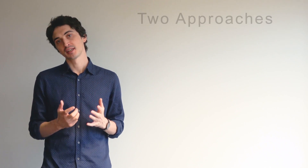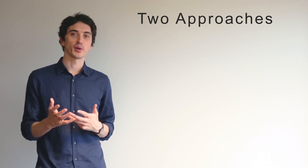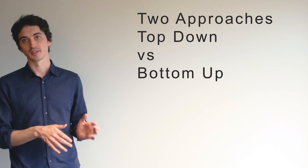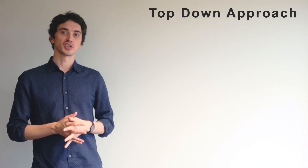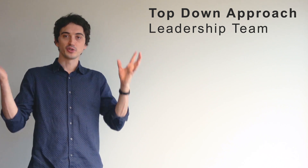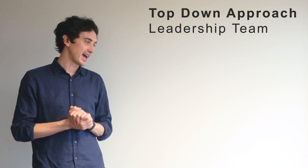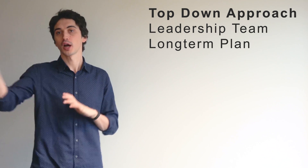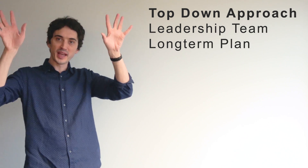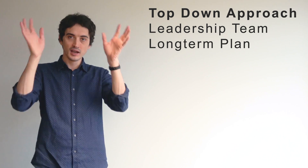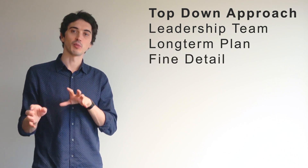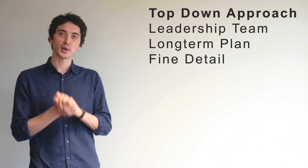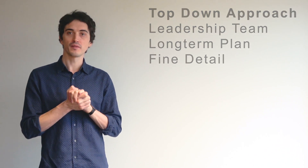So you've decided you want to do an infrastructure audit — how do you do it? The first thing to think about is the approach, and there are two key approaches: top-down versus bottom-up. Top-down, as it sounds, you start with your leadership team and your strategic goals, working your way down through the organisation. That might mean looking at your business plan for the next three years, your product roadmap — starting with the bigger, more holistic picture and then filtering down to the detail of what you've actually got and how it all fits together. This is quite common, as these processes tend to get triggered by leadership teams.